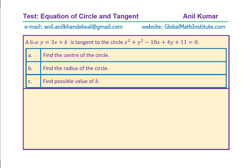Question number three: a line y = 3x + K is tangent to the circle x² + y² − 10x + 4y + 11 = 0, where the equation is given in standard form. Find the center of the circle, find the radius of the circle, and find the possible values of K so that this line is tangent to the given circle.